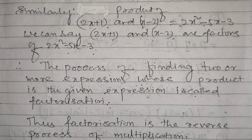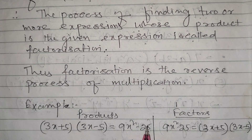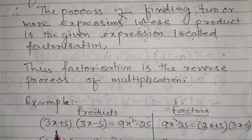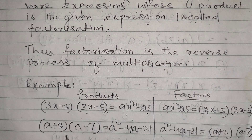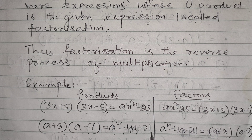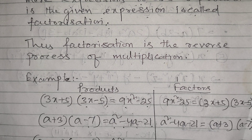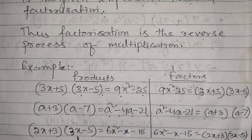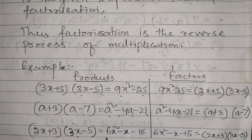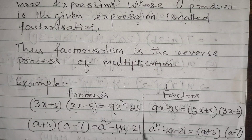For example: (3x+5)(3x-5) = 9x² - 25. The product of (a+3)(a-7) = a² - 4a - 21. Also (2x+3)(3x-5) = 6x² - x - 15. These show multiplication going one way.